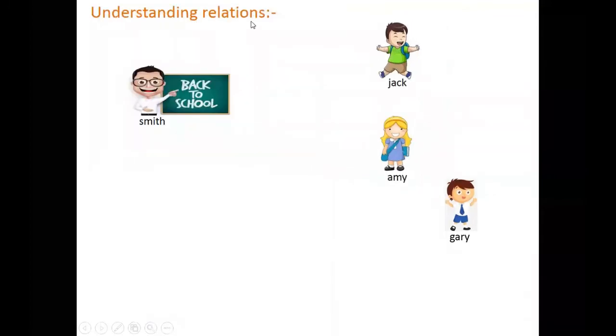Now let us consider a second scenario. Here the same students are there: Jack, Amy, and Gary, and Smith is the teacher, but the condition is a little bit different. Assume that Smith teaches Jack and Smith teaches Amy, but he does not teach Gary. So ultimately this becomes a relation under the term 'teaches'. Our ordered pairs will be Smith with Jack and Smith with Amy because Smith teaches both Jack and Amy, not Gary.